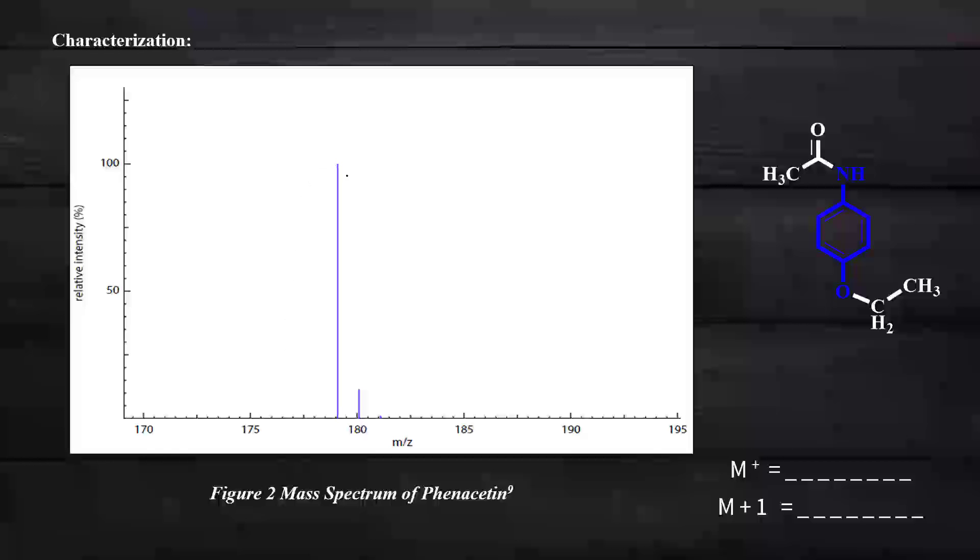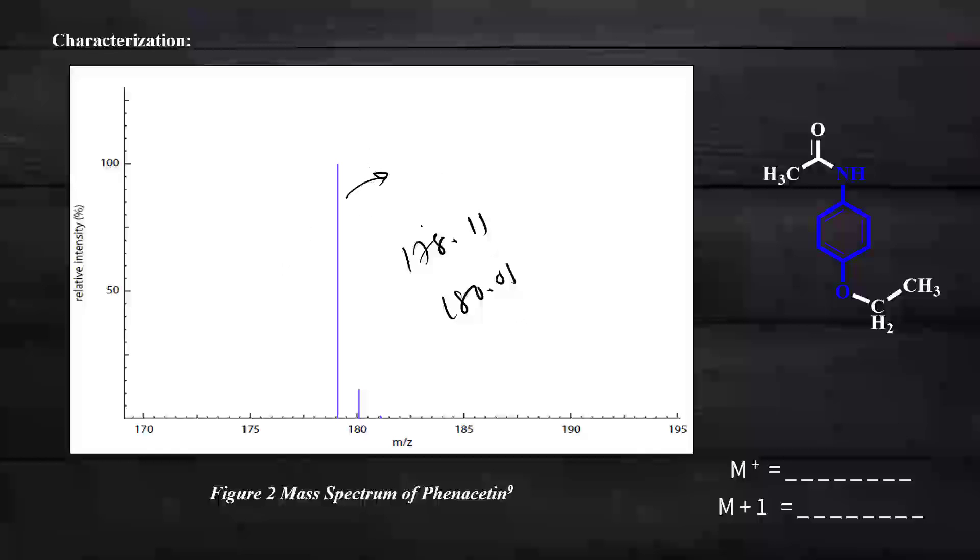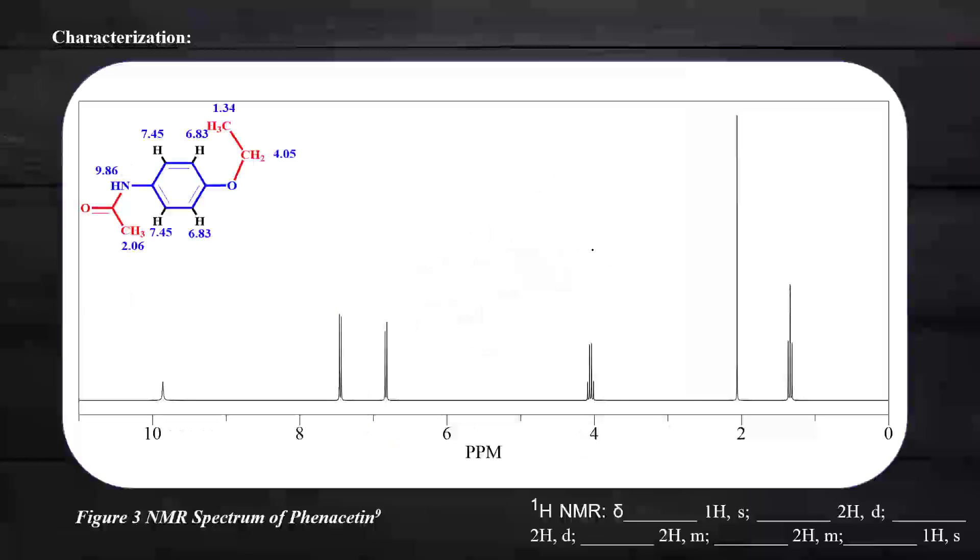The next graph is the mass spectrum, which is very easy to solve. If you see, there is 178.11 and 180.01. As seen before, the molecular weight is 179.22, so here it's about 179.11. That is the M+ peak and M+1 peak. The mass spectrum confirms that yes, the formation of phenacetin is done through molecular weight calculation. The final step which can identify perfectly whether phenacetin was prepared or not is with the help of NMR technique.